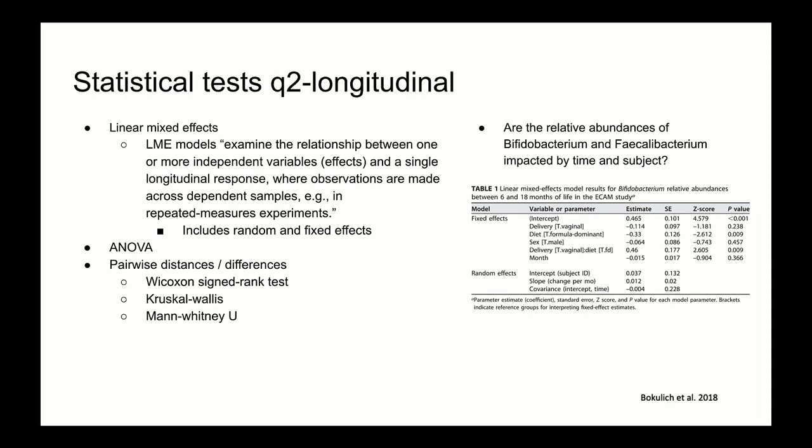First differences can handle microbial feature abundance data or other metrics from a metadata file. In contrast, pairwise distances act directly on a distance matrix to examine distances between paired samples and whether these distances differ significantly between groups. Paired differences and distances are only useful for paired data. So what if we have multiple time points, like in the ECAM study? In this case, we can use linear mixed effects modeling. An LME model tests the relationship between a single response variable and one or more independent variables, where observations are made across dependent samples.